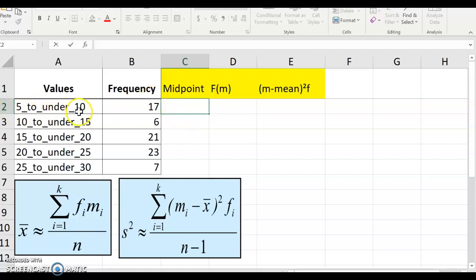First of all, 5 to under 10, 5 plus 10 divided by 2. So this would be 7.5, 12.5, 17.5, 22.5, and then 27.5.